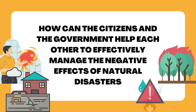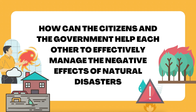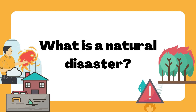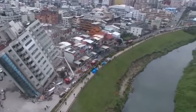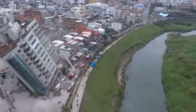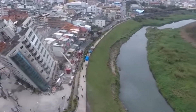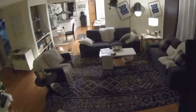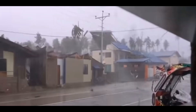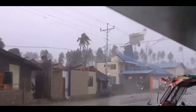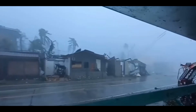How can the citizens and government help each other to effectively manage the negative effects of natural disasters? A natural disaster is the negative impact following an actual occurrence of a natural hazard in the event that it significantly harms a community. A natural disaster can cause loss of life or damaged property and typically leaves some economic damage in its wake.